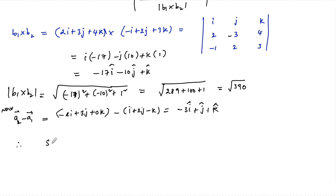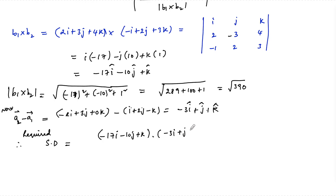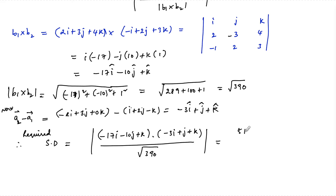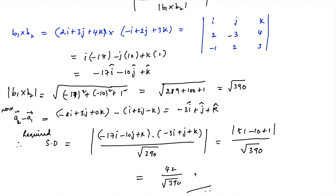The shortest distance = |(−17i − 10j + k) · (−3i + j + k)| / √390 = |51 − 10 + 1| / √390 = 42/√390 units.